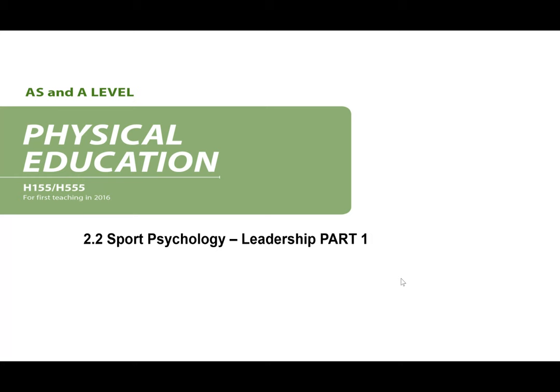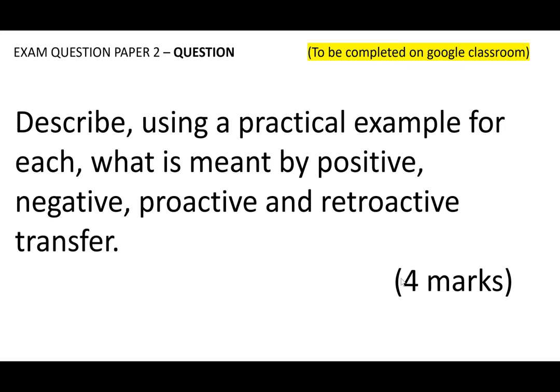Before we get any further into leadership, a bit of a retrieval question for you — some AS content for skill acquisition to change it up a little bit. On the Google Doc or in your notes, describe, using practical examples for each, what's meant by positive, negative, proactive, and retroactive transfer. Four marks — you get a mark for defining the type of transfer and then giving a sport example.